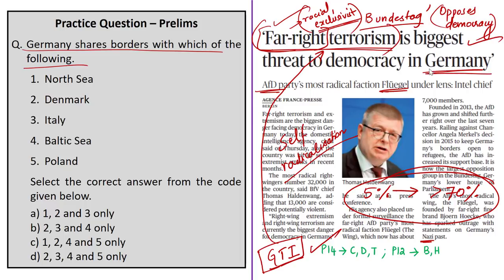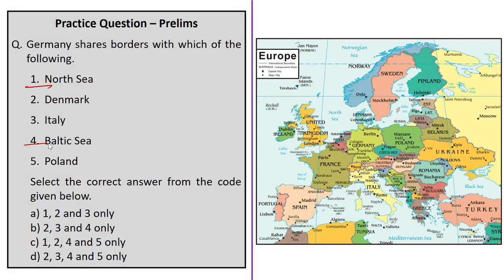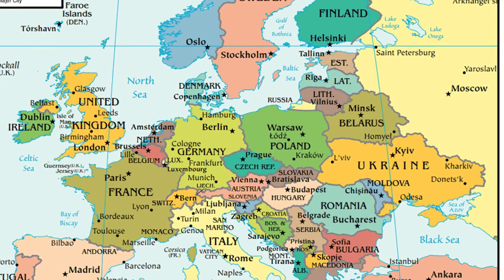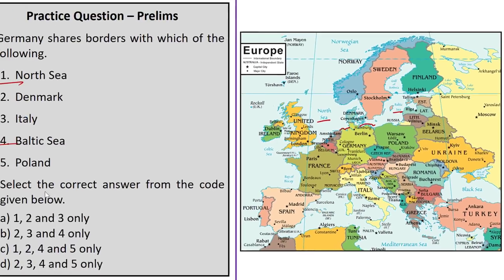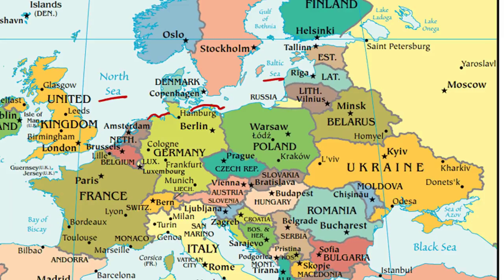From the map, Germany shares a border with the North Sea and also the Baltic Sea, so the final answer should contain both options 1 and 4, which is present in option C. Denmark also shares a border with Germany, along with Poland, but Italy does not share a border with Germany. Other countries that share a border with Germany are France, Austria, and the Czech Republic.